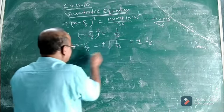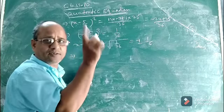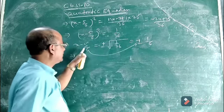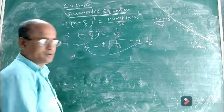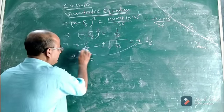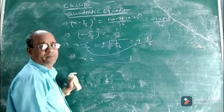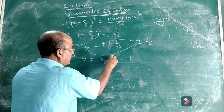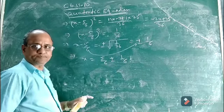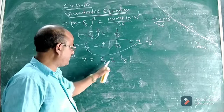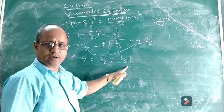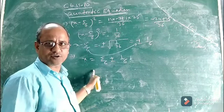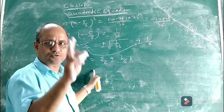Our aim is to find the value of x. Take minus 5/6 to the right-hand side — it becomes plus 5/6. So x equals 5/6 plus or minus 1/6. This means x will have two values, two roots, two solutions.